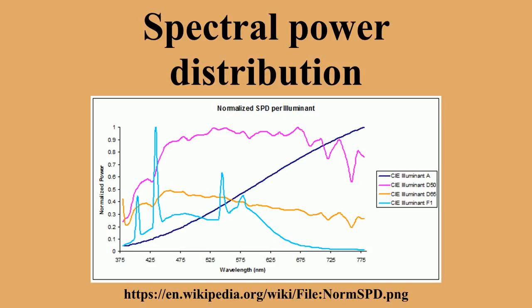In radiometry, photometry, and color science, a spectral power distribution measurement describes the power per unit area per unit wavelength of an illumination. More generally, the term spectral power distribution can refer to the concentration as a function of wavelength of any radiometric or photometric quantity. Knowledge of the SPD is crucial for optical sensor system applications.